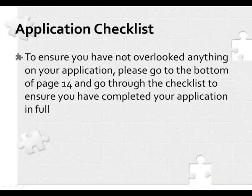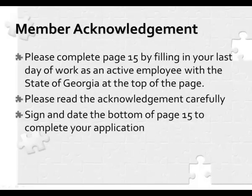At the bottom of page 14, you'll find a checklist to ensure you've completed all required information for a successful submission. The final step is to complete page 15, the Member Acknowledgement. At the top of the page, fill in your last day of employment. Read the acknowledgement carefully, then sign the bottom of page 15 and provide the last four digits of your Social Security number and the date. This finishes the application process.